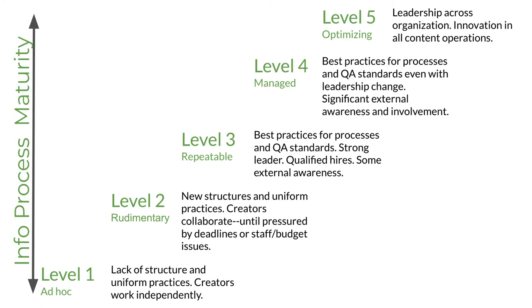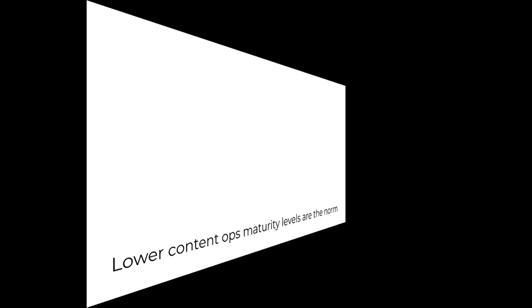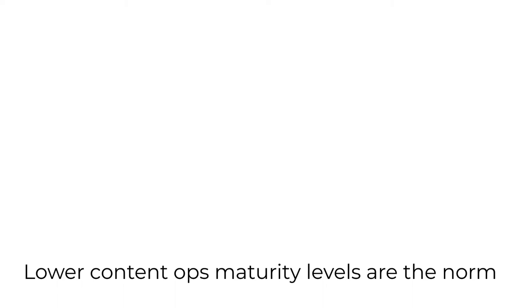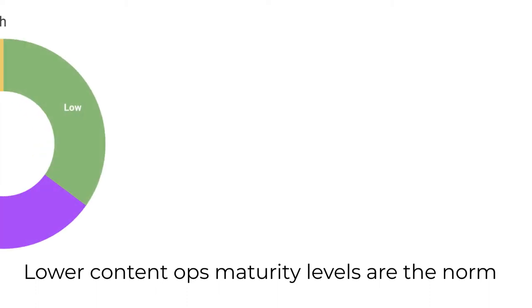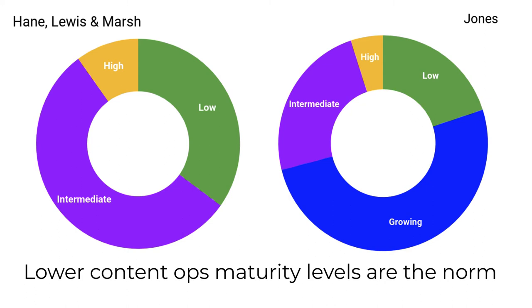The highest level, level five, is labeled "optimizing" — also labeled strategic or thriving in other models. There is now content leadership across the organization and innovation in all content operations. It's worth noting that large organizations might have multiple levels of maturity in different business units. Unfortunately, lower levels of maturity appear to be the norm. Both the research by Hayne and her colleagues and that done by Jones in 2017 found high maturity levels were rare. As Jones wrote in The Content Advantage: "I believe the study sample was slightly skewed toward companies that care enough about content to hire content professionals. Based on my experience, I'd put most companies a little lower."